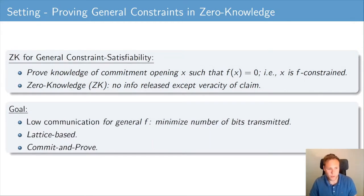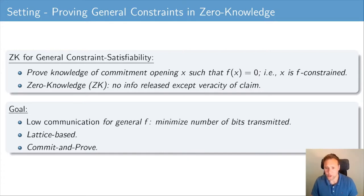Our goal is to construct protocols for precisely this task, and our protocols should have low communication complexity. In particular, we aim for a polylogarithmic communication complexity. Moreover, we want the underlying hardness assumptions to be lattice-based. Finally, we aim for a commit-and-prove functionality where the prover first commits to the secret input value and at some later point in time decides to prove statements about the committed input value.